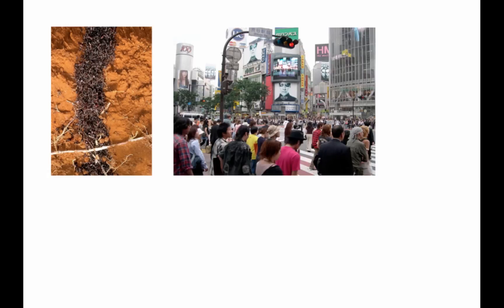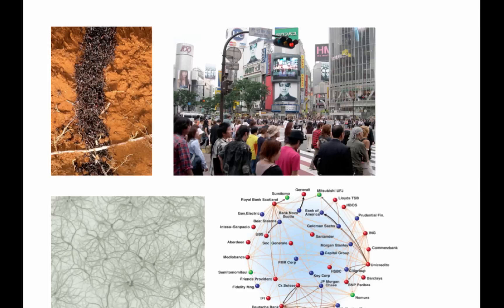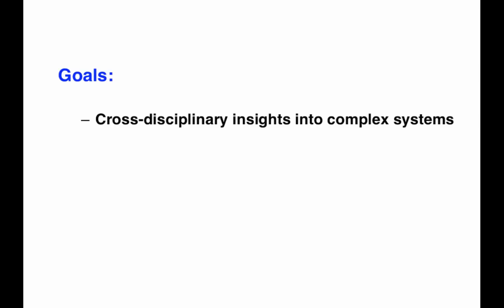Or to what extent is the flow of information in a brain network similar to that in an economic network. These kinds of cross-disciplinary insights are, to date, the greatest success of complex systems science. We'll cover many of these in this course.